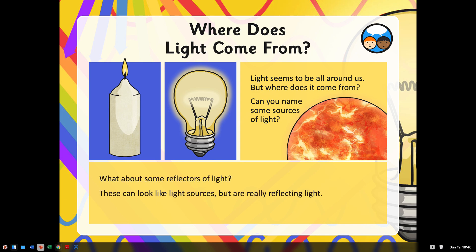You have sources, but then you've also got reflectors. A reflector of light is something that allows light to bounce off of it. For example, the moon. The moon does not produce its own light. It merely reflects light coming from elsewhere.